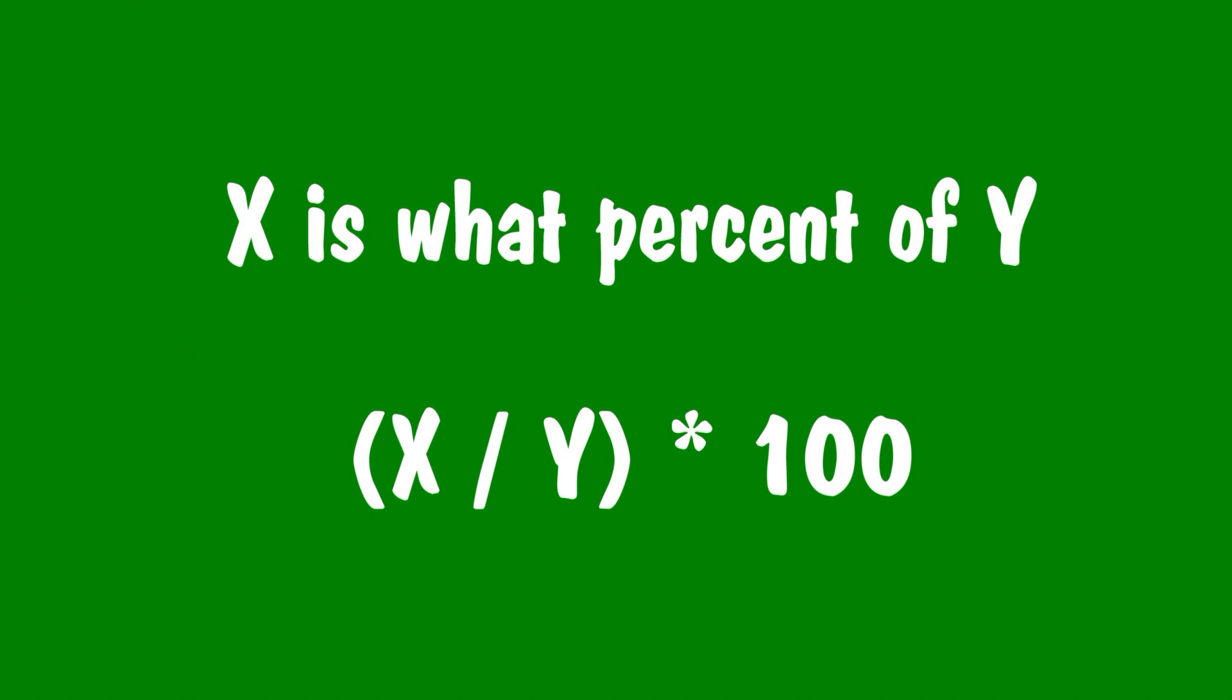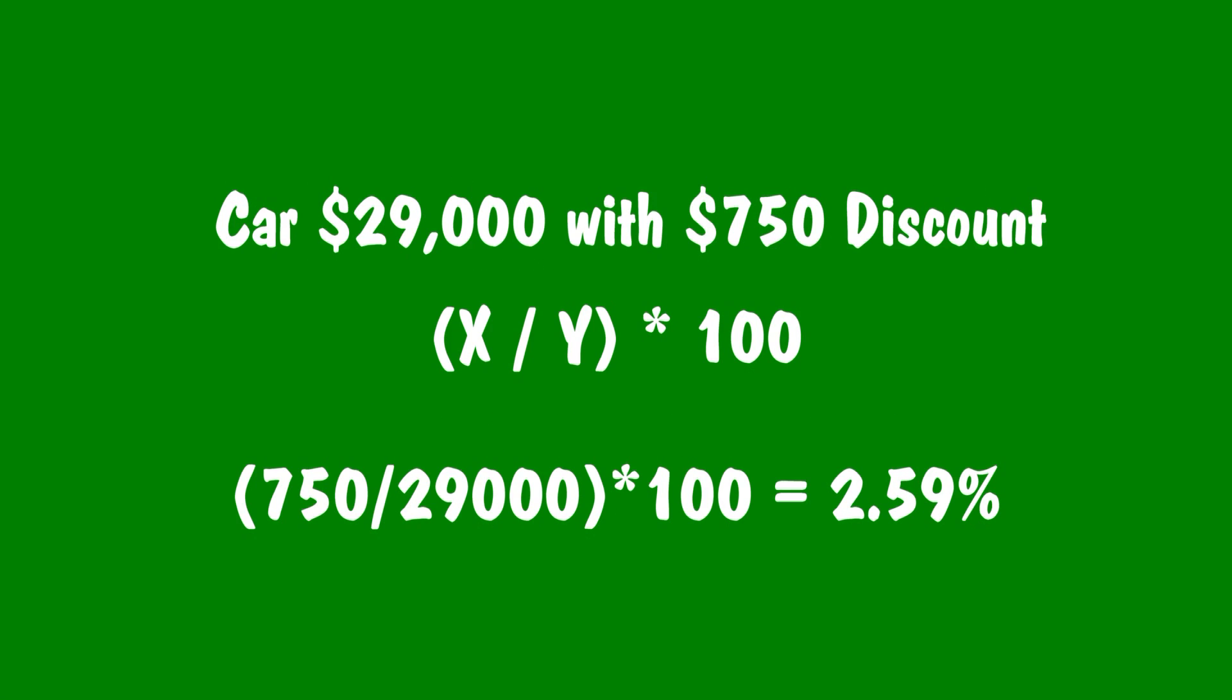So in this next lesson here, we're trying to figure out x is what percent of y. So for example, I think the car salesman was really nice because he gave you a $750 discount off the car you bought for $29,000. So you're trying to figure out what percent discount the guy actually gave you on your car. The formula here is x divided by y times 100. In this case, x is 750 and y is 29,000. So what you got to do is do 750 divided by 29,000 and times whatever that is by 100. And if you do the math, you get it's actually a 2.59% discount. So not exactly a good deal.